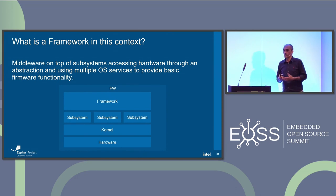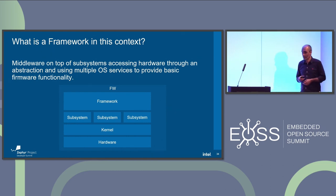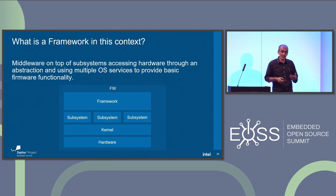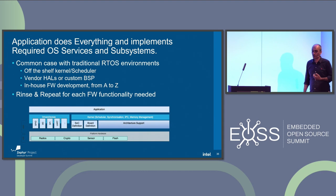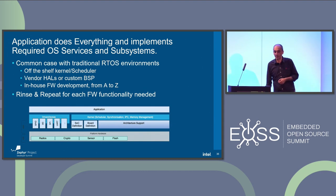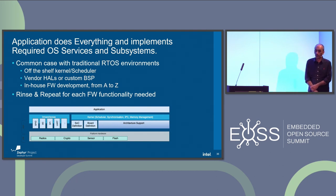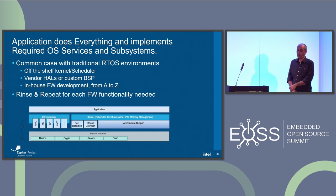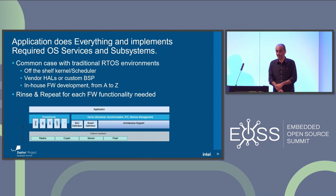That's where we try as much as possible to stay generic and make sure that whatever you are providing in the project is reusable and useful for others. Going through the history of how things have developed, the common case in traditional RTOS environments is you get a basic off-the-shelf kernel scheduler, a BSP from your vendor or a custom one you build yourself.